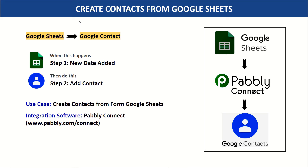Hello everyone. In this video we will learn how to add contacts in Google Contacts whenever new data is added to Google Sheets. Imagine you have added data of a person called John in Google Sheets — their name, email address, phone number, and all those details. Now you want to add John as a contact. You can either copy all the details manually, which is repetitive and tiresome, or you can bring in some automation so that when new data is added in Google Sheets it will automatically create a contact in Google Contacts.